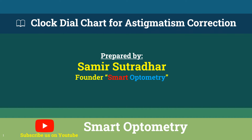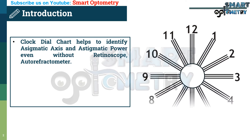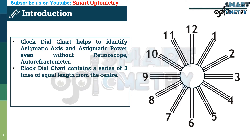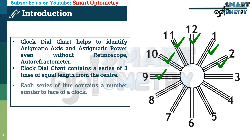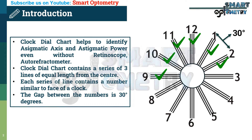Today I will discuss the clock dial chart for astigmatism correction. The clock dial chart helps to identify astigmatic axis and astigmatic power even without a retinoscope and auto-refractometer. It contains a series of three lines of equal length from the center, and each series of lines contains a number similar to the face of a clock. The gap between numbers is 30 degrees.